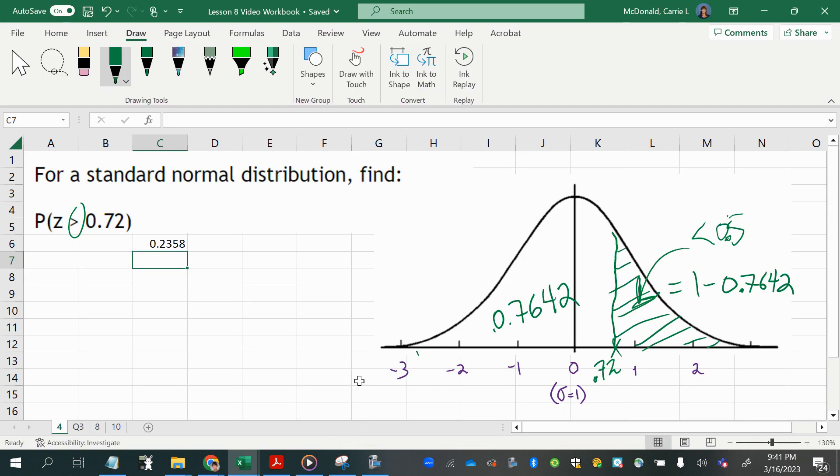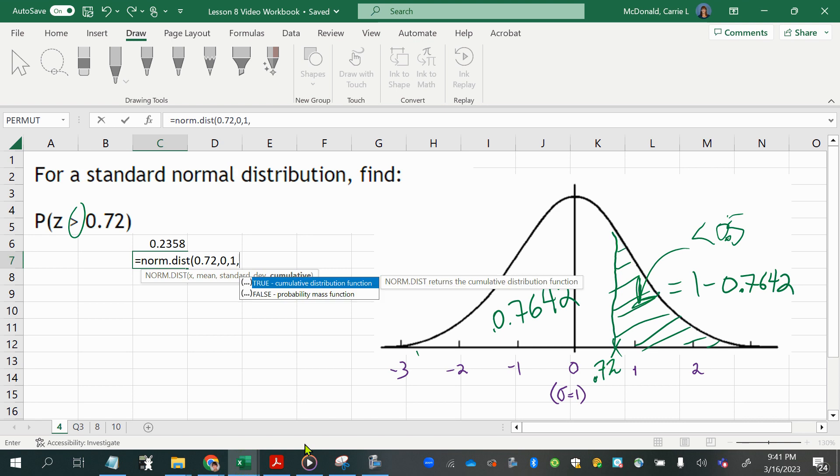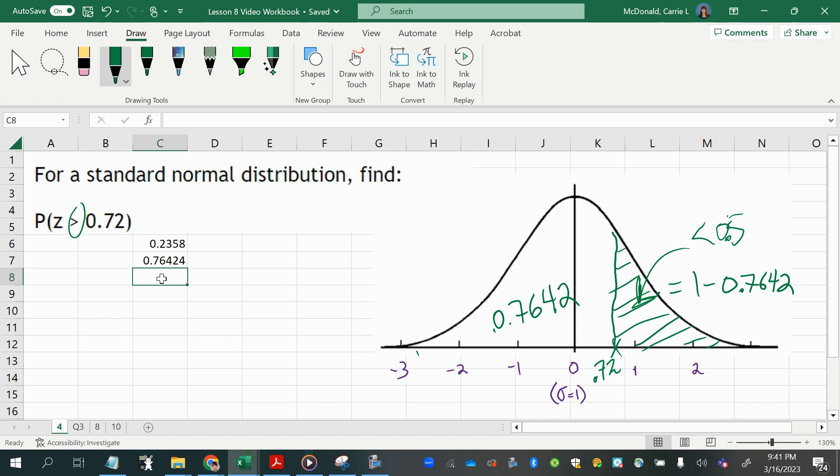And still another way to do this is to use technology. And so if you're doing it with Excel, you can do norm.dist with your z-score of 0.72, the mean of 0 and standard deviation of 1. Again, that's unique to standard normal distributions. And always choose true for cumulative. Now remember, this answer, since I'm expecting my area to be smaller than half, hopefully I would realize at this point that I need to subtract this answer from 1 to get the final answer here.